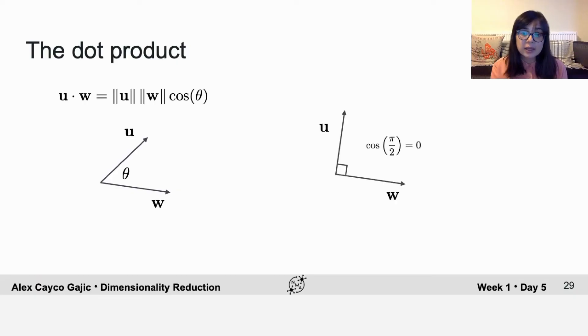And what happens if it is at a right angle? So if they're perpendicular or orthogonal, then the cosine is equal to zero. So that means that the dot product is zero. And in fact, two vectors are defined as orthogonal exactly when the dot product is equal to zero.